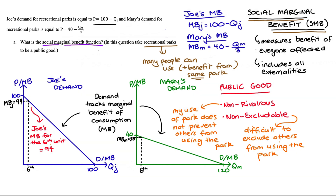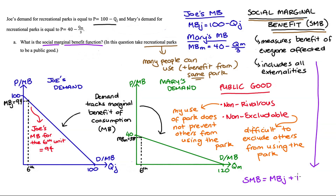For our question, the status of the recreational park as a public good means both Joe and Mary receive benefit from the same marginal park. So our social marginal benefit function will be equal to Joe's marginal benefit plus Mary's marginal benefit. That sum gives us our social marginal benefit function, but we do need to be careful because it's not quite the whole story.